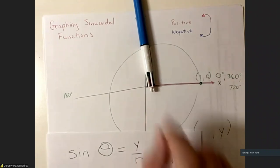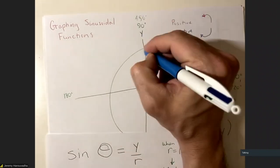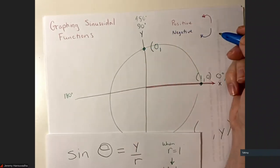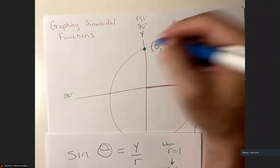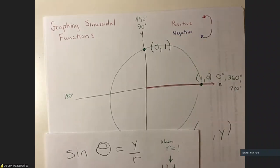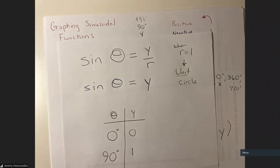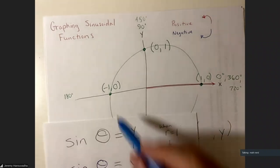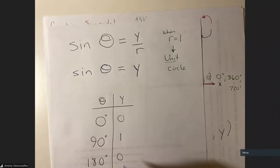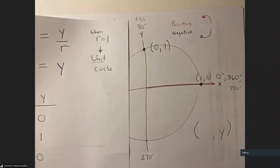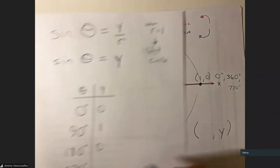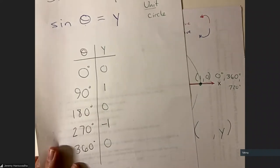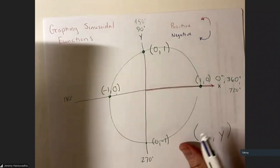At 90 degrees, sine equals 1. For 180 degrees we have the point (−1, 0), so y is zero and sine of 180 equals 0. Continuing down to 270 degrees, we get the point (0, −1), so y is negative 1. Back at 360 degrees, the point shares the same y-value as zero degrees, giving sine of 360 equals 0.